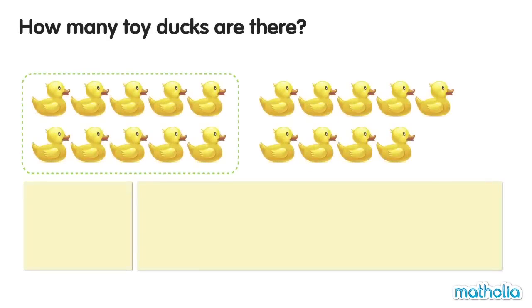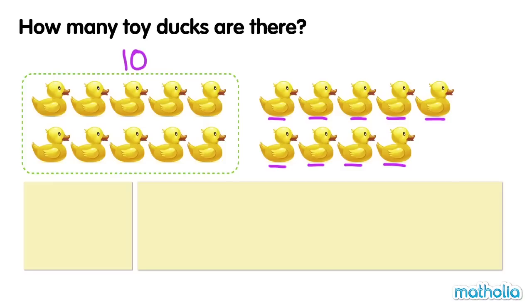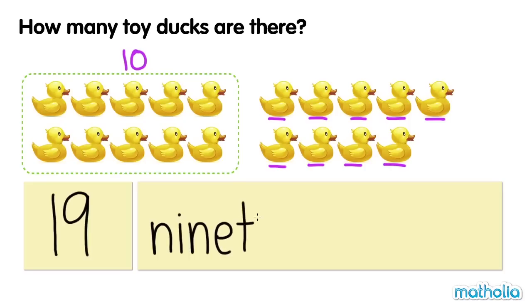How many toy ducks are there? Ten, eleven, twelve, thirteen, fourteen, fifteen, sixteen, seventeen, eighteen, nineteen. There are nineteen toy ducks. Nineteen.